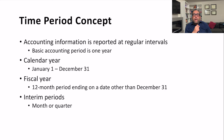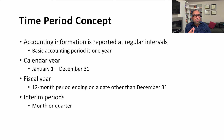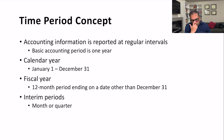Accounting information is reported for a certain period. The income statement is a flow concept — it covers a specific period. The statement of retained earnings and the statement of cash flows also cover a period, while only the balance sheet is a point-in-time snapshot. These reporting periods occur at regular intervals, such as quarterly, semi-annually, or annually.